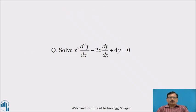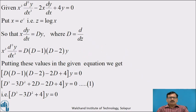Now, solve x cubed d cubed y by dx cubed minus 2x dy by dx plus 4y equal to 0. The given equation is x cubed d cubed y by dx cubed minus 2x dy by dx plus 4y equal to 0, which is clearly a homogeneous linear equation.